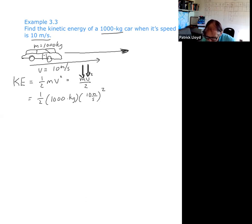So really what we have is 1000 times 100, which is 100,000 divided by 2, which looks like it's about 50,000.